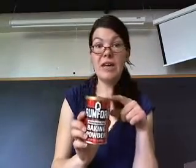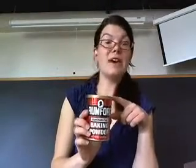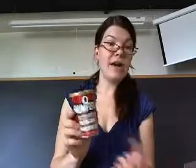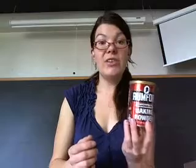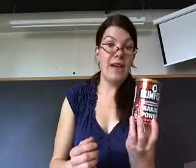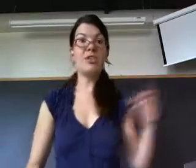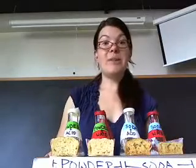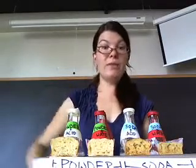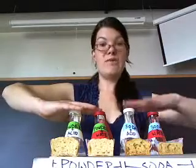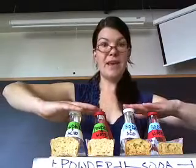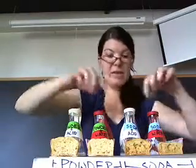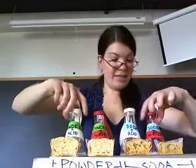Baking powder contains baking soda as well as a compound that forms an acid when it gets wet. So when you bake with baking powder, you don't have to add an acid — all you have to do is add something wet. It has its own acid. I'm going to show you how that works. So here I have a bunch of Erlenmeyer flasks, and two of them have baking powder and two have baking soda.